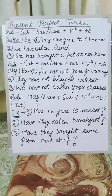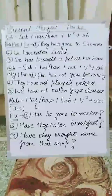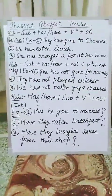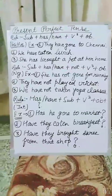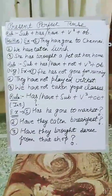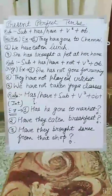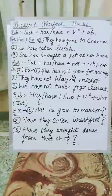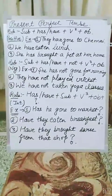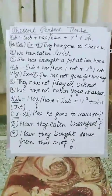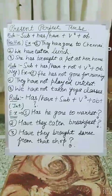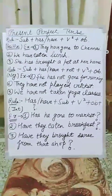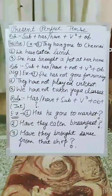Basically, the sentences in Hindi which ended with 'chuka hai' or 'chuki hai' are used in present perfect tense. Here we have two helping verbs: 'has' and 'have'. 'Has' we basically use with singular — he, she, it — and 'have' we use with plural: I, we, you, they, and many other plural subjects.